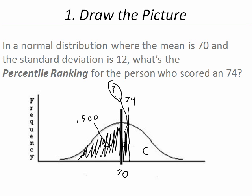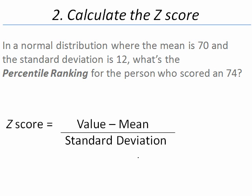Now we know what we need to do. Let's go ahead and get started. Our next step is going to be to figure out how many standard deviations there are between this mean of 70 and this value of 74. Our z-score formula is value minus the mean divided by standard deviation. The z-score formula tells you the number of standard deviations between the value and the mean.